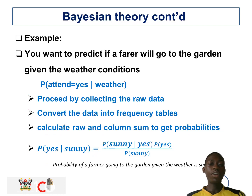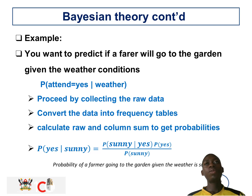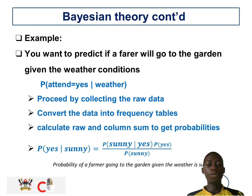Continuing with Bayesian theory, an example will be used to predict whether a farmer will go to the garden given that the weather conditions are favorable. The probability of attending equals yes if the weather is good. You first collect the raw data containing various scenarios of a farmer going to the garden under various weather conditions, convert the data into frequency tables, calculate the column sums, get the probabilities, and apply the formula.